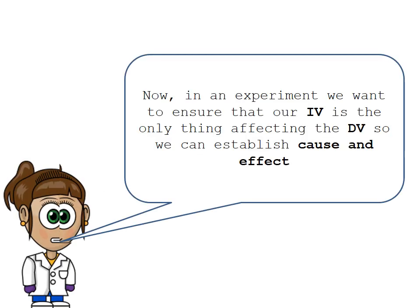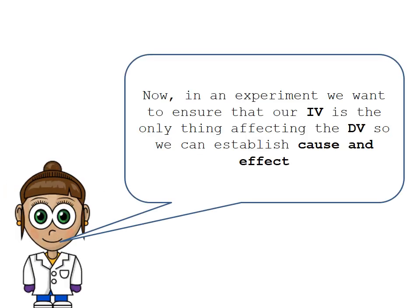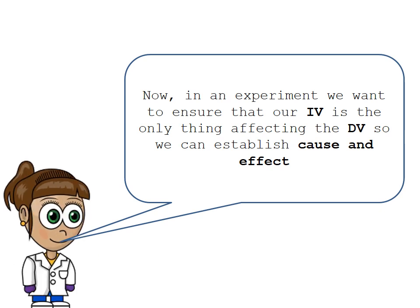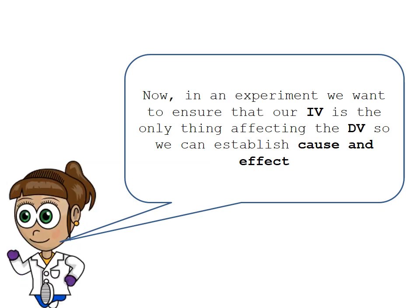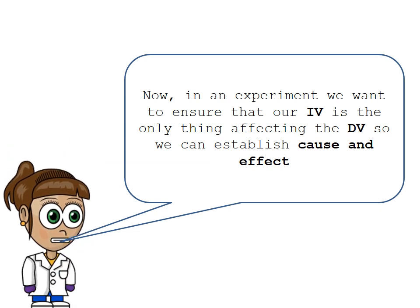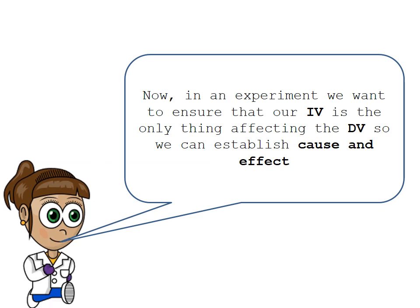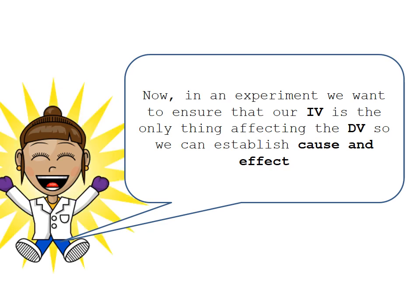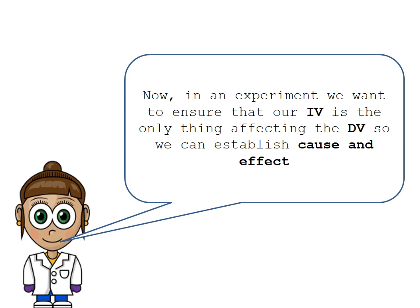In an experiment, we want to ensure that our IV — our independent variable — is the only thing affecting the dependent variable, so we can establish cause and effect. We really want to conclude that the only reason we got our results was because of the change in our independent variable and the manipulation we made with it.